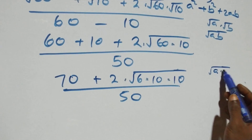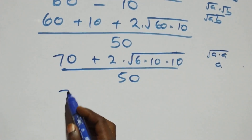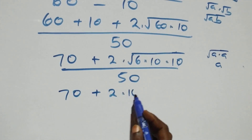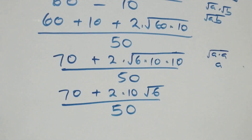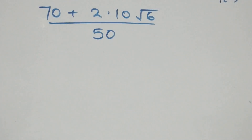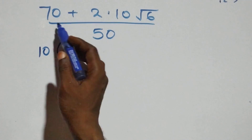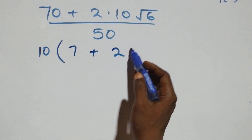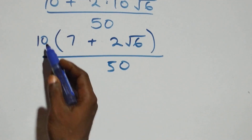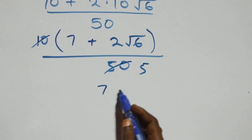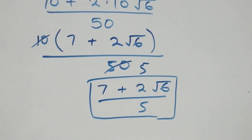Since root a times a equals a, we have root 10 times 10 which gives us 10 out, leaving root 6. So we have 70 plus 2 times 10 times root 6, over 50. We can factor 10 from the numerator: 10 into bracket 7 plus 2 root 6, over 50. Then 10 over 50 simplifies to 1 over 5, and we are left with 7 plus 2 root 6 over 5 — which is the same answer as in the first method.